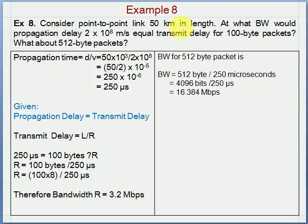Example 8: if propagation delay equals transmit delay, calculate the bandwidth for the given frame size. From the given input we calculate propagation delay, and using the given condition we calculate bandwidth as 3.2 Mbps. Using the same formula with packet size of 512 bytes, we get bandwidth of 16.384 Mbps.